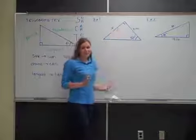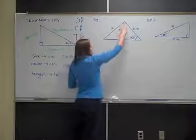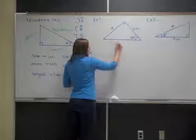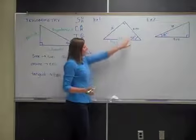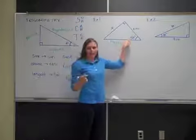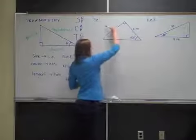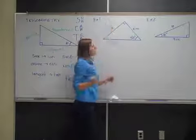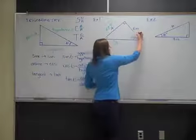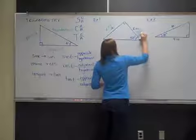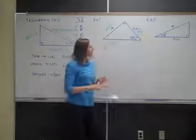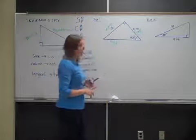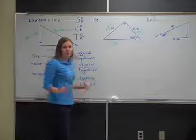I almost always label the hypotenuse first — straight across from the right angle is the hypotenuse. Next, look at the angle we're given and imagine shooting out of a cannon at it. It lands over here, and this side is the opposite. The remaining side that hasn't been labeled yet is the adjacent. Now take a look at the information you're given and what you want to find out, and decide which trig ratio applies.